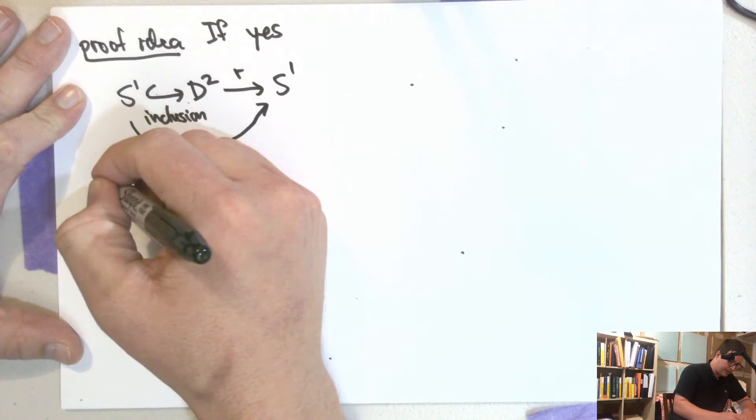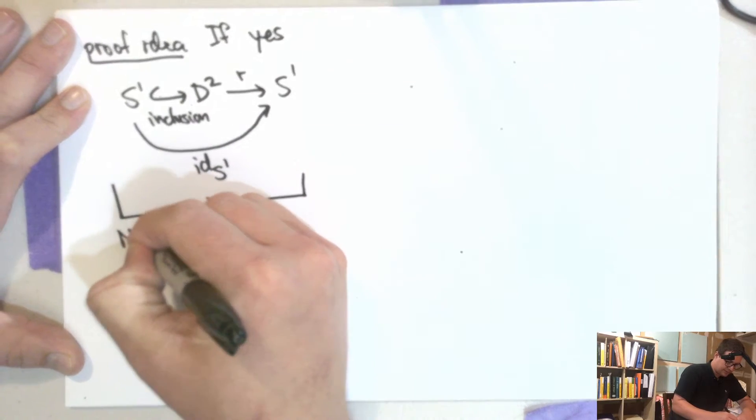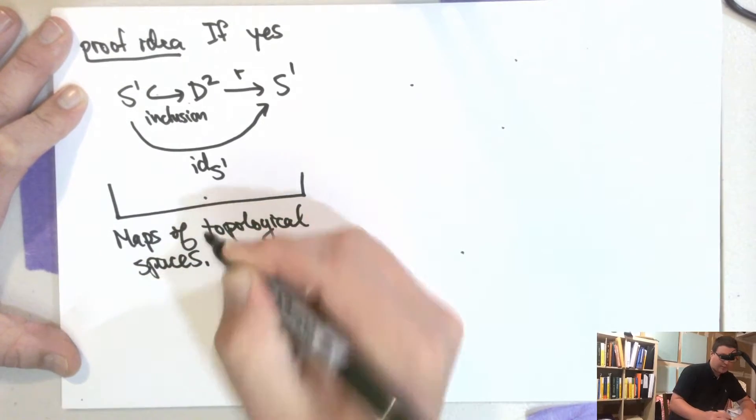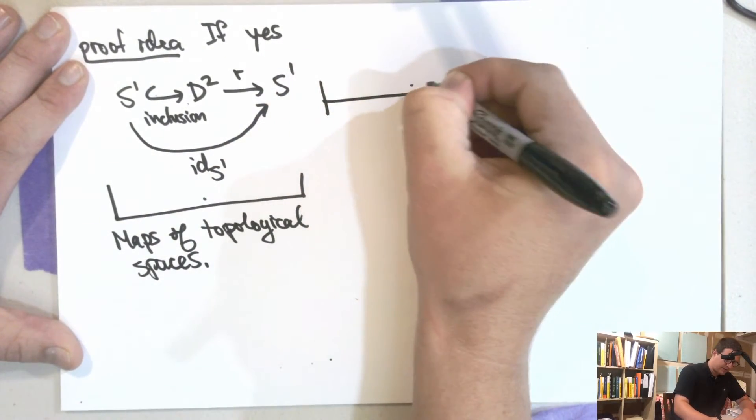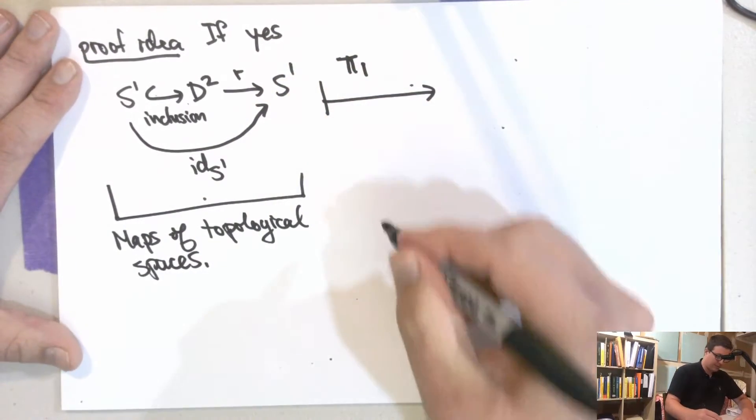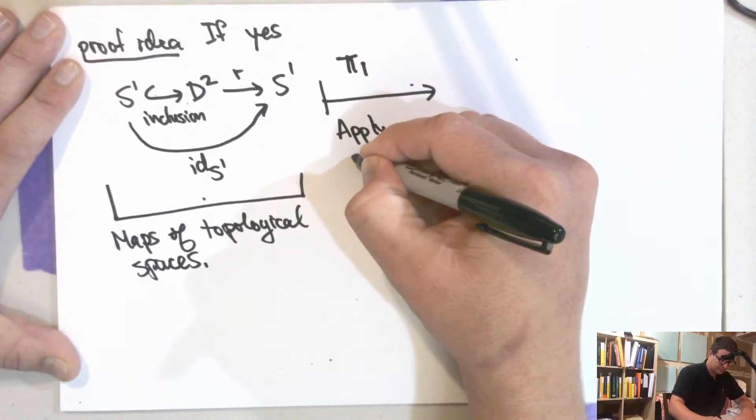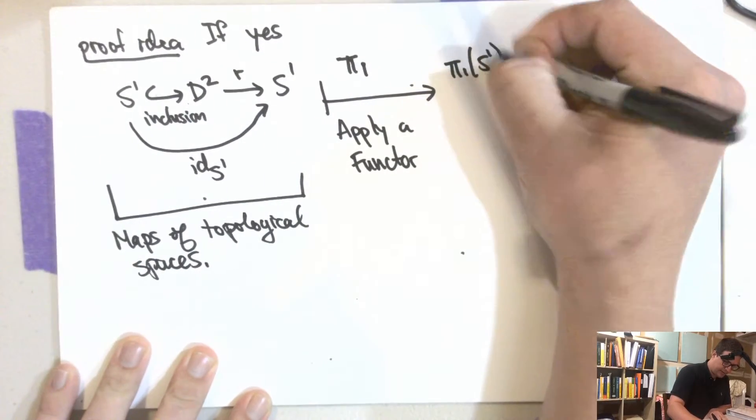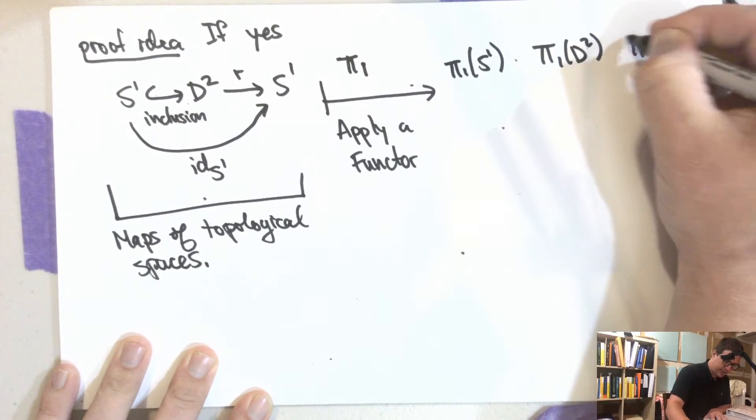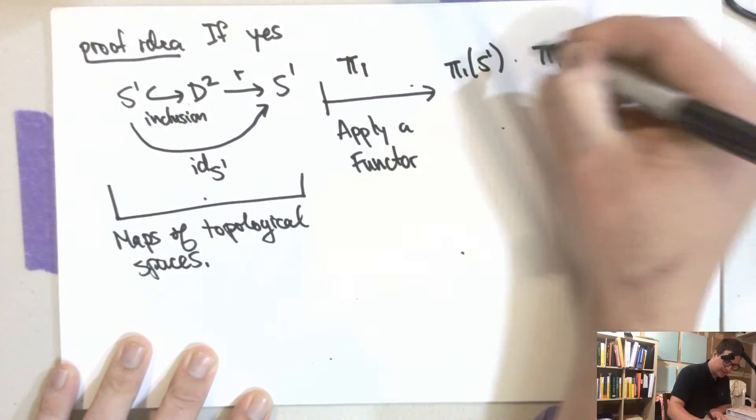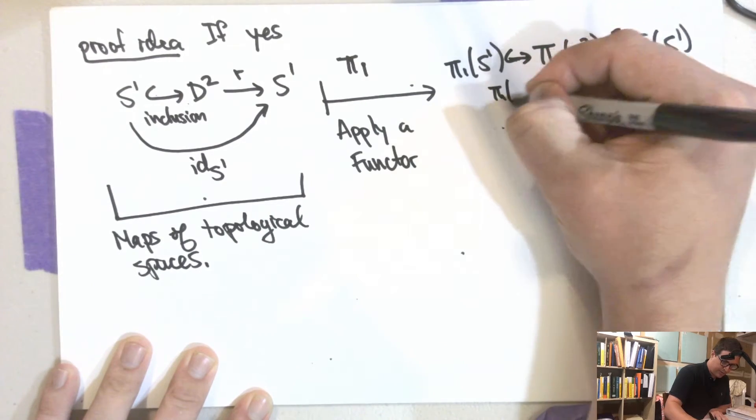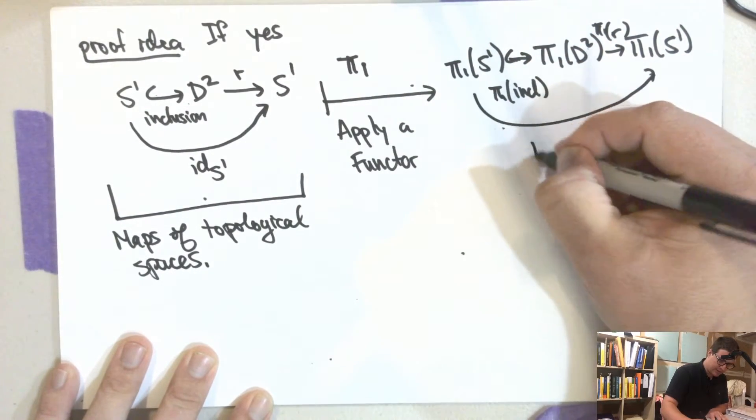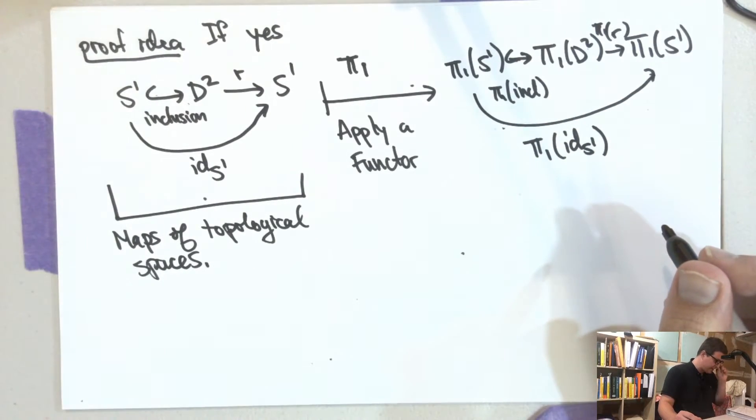So we want to apply a functor. So this thing here is maps of topological spaces, continuous maps of topological spaces. And so what we'll do is we'll apply this functor, what's called a functor here. So we apply a functor. And what happens is just that everyone gets a π₁. So we get π₁ of S¹. We get a π₁ of D² of the disk. And we get a π₁ of S¹ here. And this is R. This is π₁ of the inclusion. So this is π₁ of R. And then this is π₁ of the identity of S¹. And then π₁ of the identity is the identity.